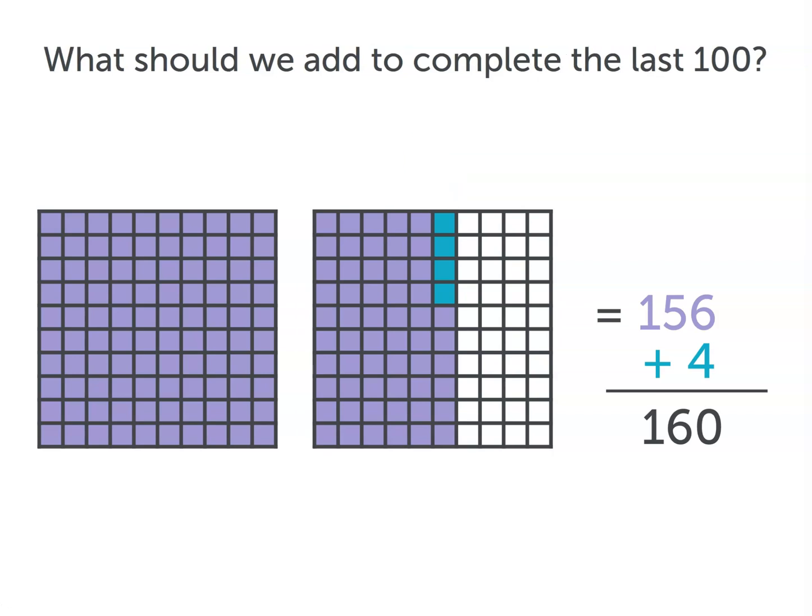What should we add to complete the last 100? What do we need to fill in right here? We need to fill in all four rows of 10. In other words, 160 plus 40 is 200.